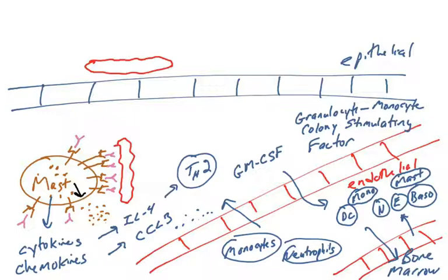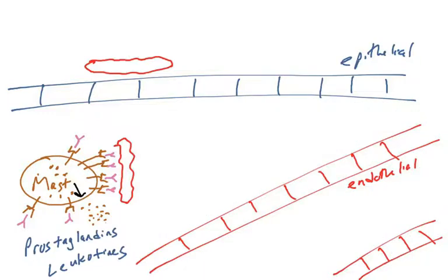So those are three cytokines we can cover: IL-4, CCL-3, GM-CSF, released and made by mast cells. Lastly, we're going to talk about prostaglandins and leukotrienes. These are small molecules that mast cells will synthesize. So they turn on genes that have enzymes that make prostaglandins and leukotrienes. These molecules induce inflammation and cause pain.